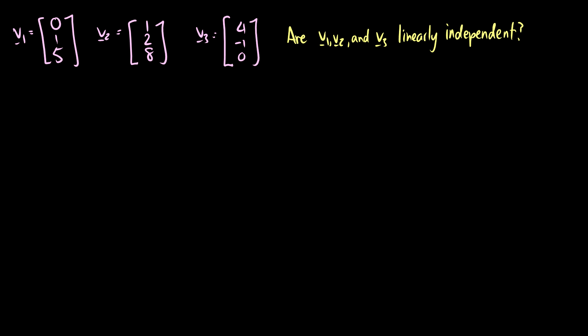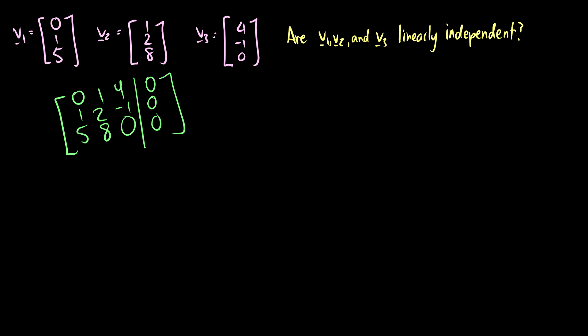Here's the question: are v1, v2, and v3 linearly independent? We solve this as a homogeneous system. We take the matrix with columns v1, v2, v3 — entries 0, 1, 5 / 1, 2, 8 / 4, -1, 0 — augmented with the zero column, and solve.